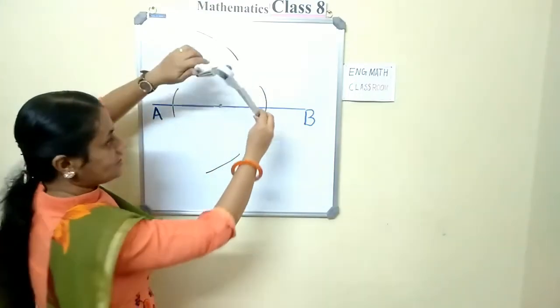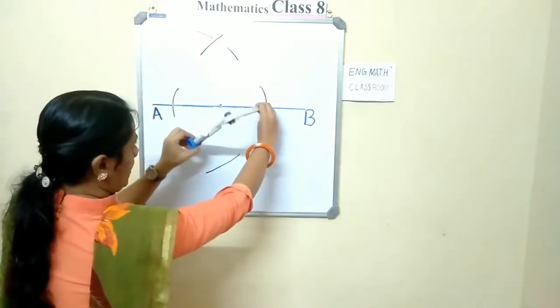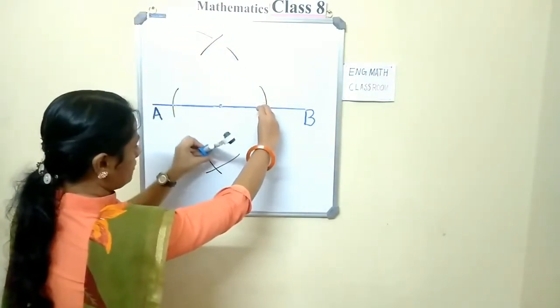Do not change this length. Keep it here. Cut an arc upward and cut an arc downwards.